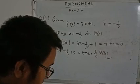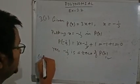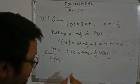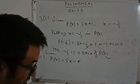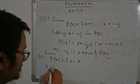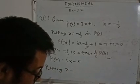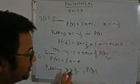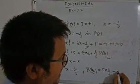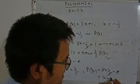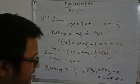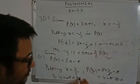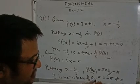In this way you can solve. Now question number 2: given P(X) equals 5X minus π. Put X equals 4 by 5. P(4/5) equals 5 into (4/5) minus π. The 5s cancel, giving 4 minus π, which is not equal to 0. So 4 by 5 is not a zero of P(X).